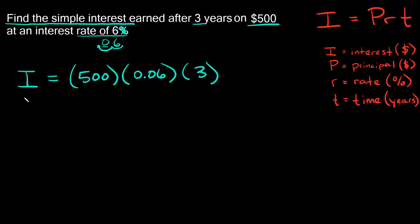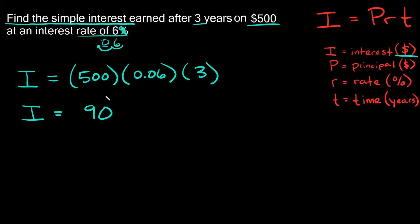So the simple interest is equal to 500 times 0.06 times 3. Plug that into your calculator and you get I is equal to 90. What are the units for simple interest? It's dollars — so your answer is $90.